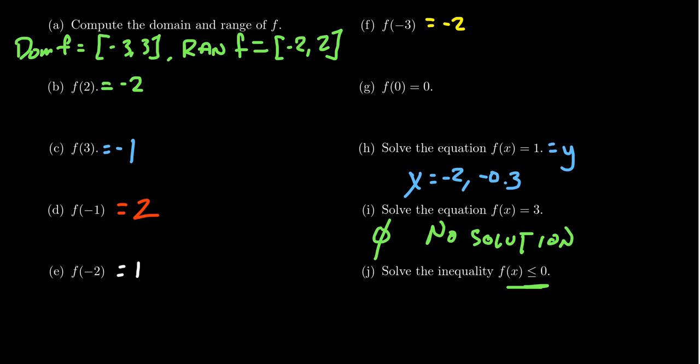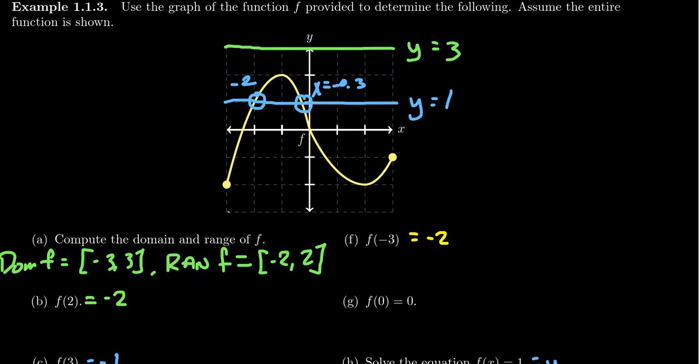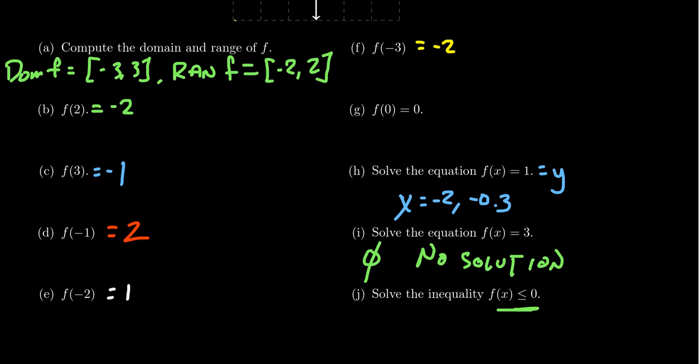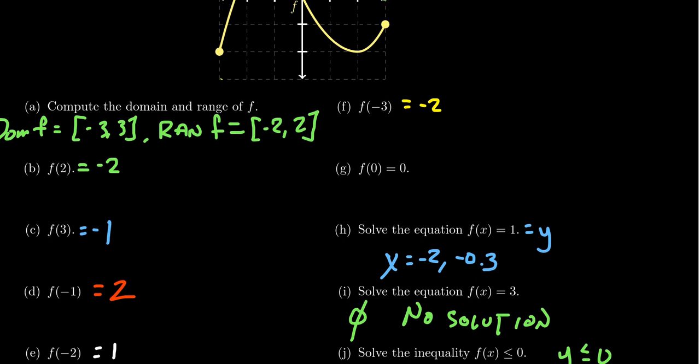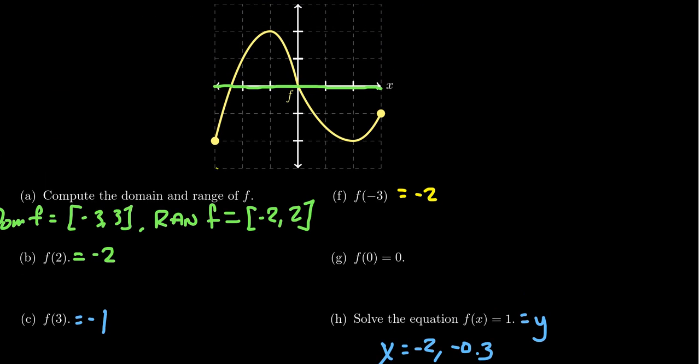Now inequalities, how do we do with inequalities here? Inequalities are handled very similar to how we solve equations graphically. We're going to start off by drawing the horizontal line y equals 0. Now be aware, that's just the x-axis in this case. We're looking for those values for which the y-coordinate is less than or equal to 0. That would mean we want to be below the x-axis. Now because it's less than or equal to, we also want the x-intercepts themselves. So we can see where we are below the x-axis.